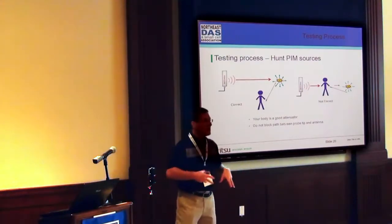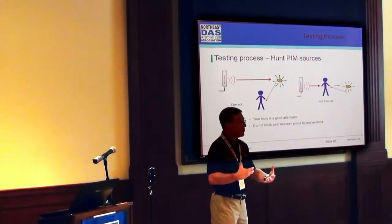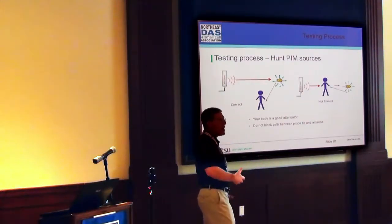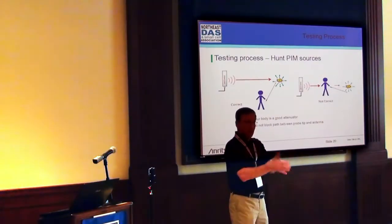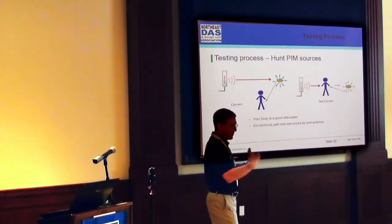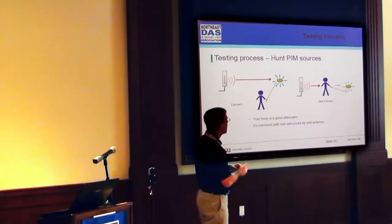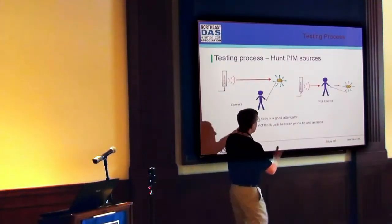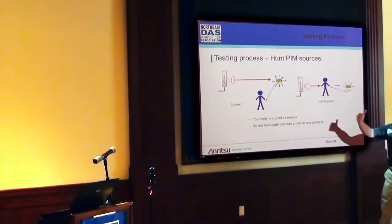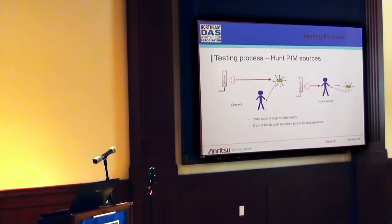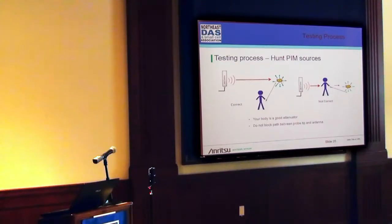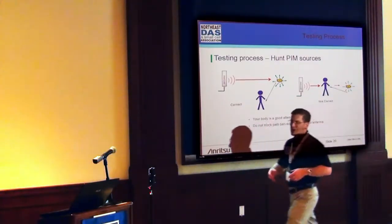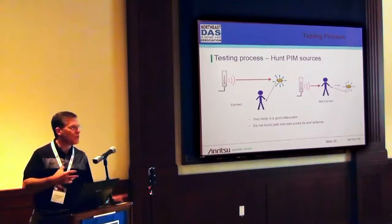But as a technician, we have things on our body and in our person. We might have a tool belt on, a cell phone, a wallet, change, keys — those create a PIM source. They're dissimilar metals, and when the energy of two signals hits them, they could become a signal source that compromises quality of the cell service. So we can't be in the middle of the path. We need to be a little bit further away from the antenna, not in the direction that the subscribers are seeing, but away from the antenna so that I'm scanning from the side, not standing in the middle of the path of RF.